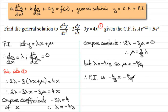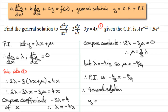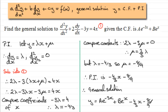Now that I have the particular integral, I can write down the general solution. y equals the complementary function — which we're told is ae to the power minus 3x plus be to the power x — plus the particular integral, minus four-thirds x minus eight-ninths.